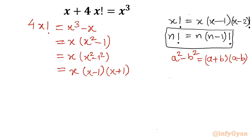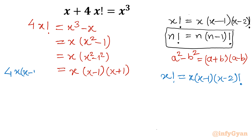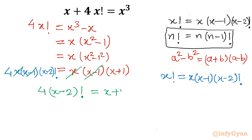Now I can write x factorial using the recursive formula as x times (x−1) times (x−2)!. So the left hand side becomes 4 times x·(x−1)·(x−2)!. We can cancel the x and (x−1) terms from both sides, leaving us with 4·(x−2)! = (x+1).